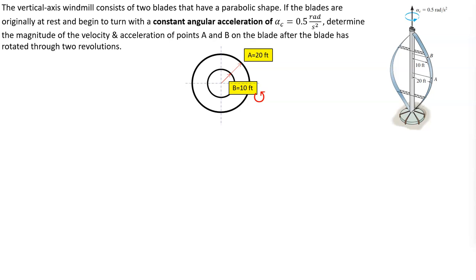On this particular problem, we have a vertical axis windmill, and it consists of two blades that have a parabolic shape. Here we have the parabolic shape, the two blades, and over here we have the windmill. The blades are originally at rest and begin to turn with a constant angular acceleration — A sub C, a constant — equal to 0.5 radians per second squared. Here is the common axis, and everything is rotating about that axis.